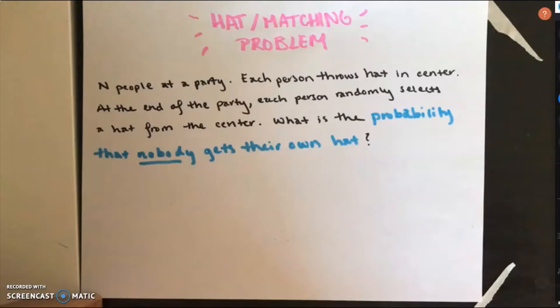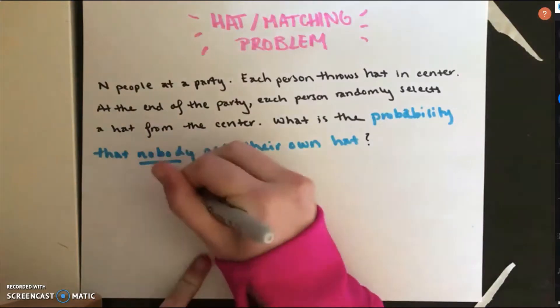This is a classic derangement problem. Derangement in probability is the permutation where none of the elements ends up in its original position. For example, to make Secret Santa work properly, you would need a derangement of the names because nobody can pick their own name out of a hat.